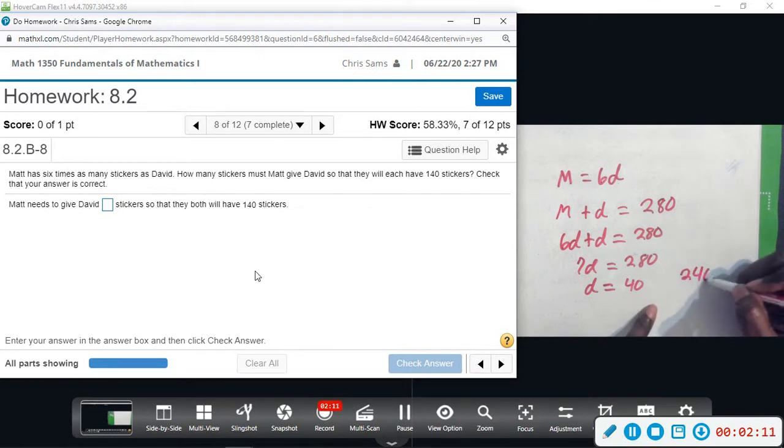Okay, so this is how many Matt has. In order for them to both have 140, Matt must give him 100. If we take away 100 here and add 100 here, that will give us 140 and 140.